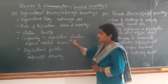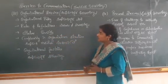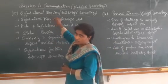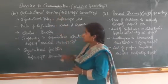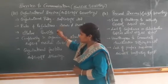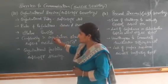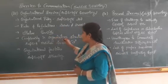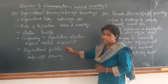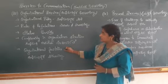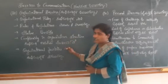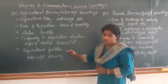Some of the organizational barriers — there are five. First one is organizational policy, then rules and regulations, status, complexity in the organization structure, and organizational facilities. These are the organizational barriers when communicating in the organization.